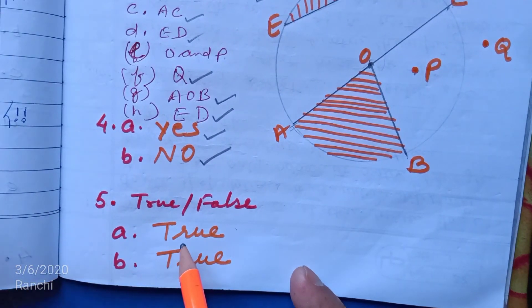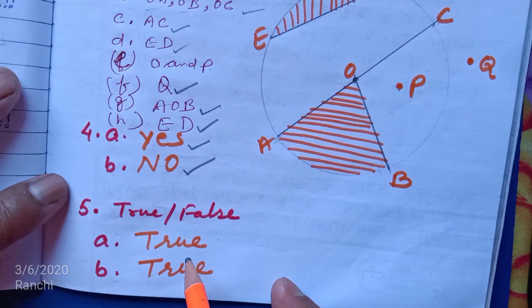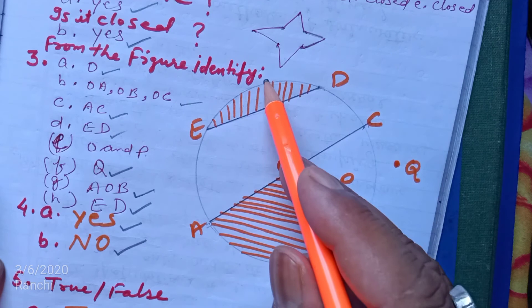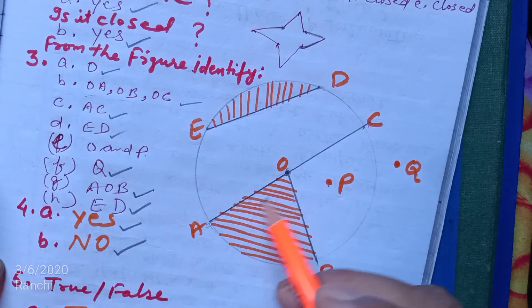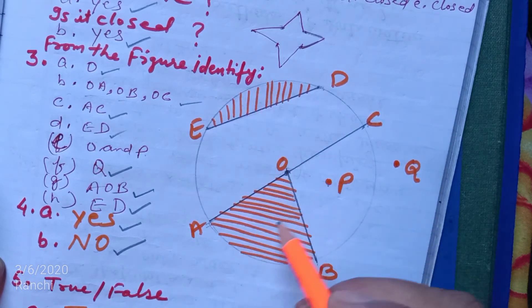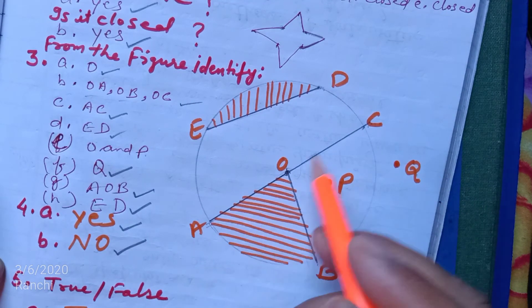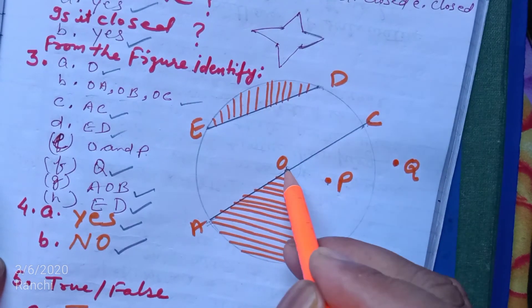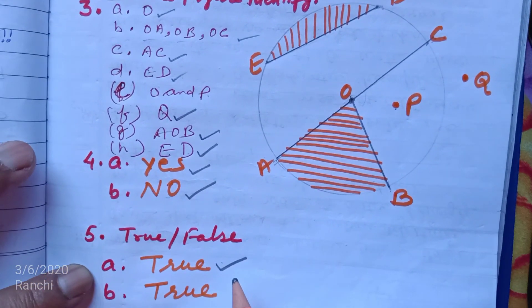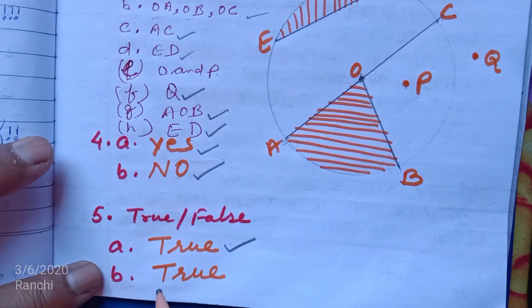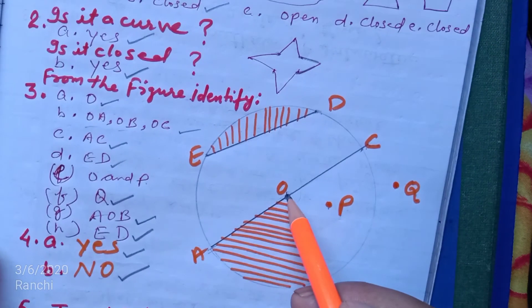Number A: Two diameters of a circle will necessarily intersect. Yes, true, because diameter always passes through center, so both diameters will intersect at the center. Number B: The center of a circle is always in its interior. This is also true.